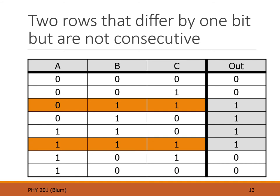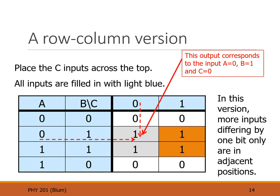We introduce a version where the inputs A, B, and C occupy not just rows but rows and columns. All combinations of A and B go down the rows in gray code order — 00, 01, 11, 10 — while input C goes across columns: 0 then 1. This is like an Excel spreadsheet or the game Battleship, where to specify a given input you need both a row and a column. For example, one entry corresponds to A=0, B=1, C=0: find the row where A is zero and B is one, and the column where C is zero, and their intersection is the output.